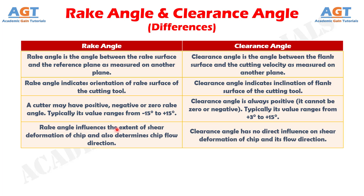Difference number 4: rake angle influences the extent of shear deformation of chip and also determines chip flow direction, whereas clearance angle has no direct influence on shear deformation of chip and its flow direction.